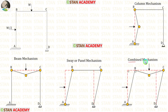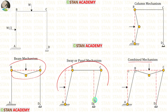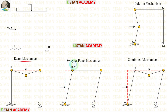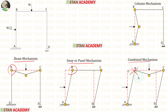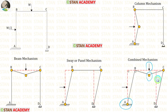Now let us do the combined mechanism. In the combined mechanism we combine the beam mechanism and the sway mechanism. In joint B there is a plastic hinge in each individual mechanism, but in the combined mechanism joint B will have no plastic hinge. We will have plastic hinges at fixed end A, under the point load, and at point C — giving three plastic hinges in total.